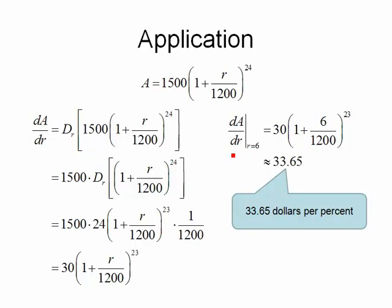So this is telling me that dA/dr, the derivative of A with respect to r, or the rate of change of A with respect to r, is 33.65 dollars per percent. So what that's telling me, if I'm at a rate of 6, and I'm going to increase my interest rate by 1%, I'm going to get 33.65 dollars more for that increase of 1%. So going from 6 to 7% means that the amount at the end of two years is going to increase by 33.65 dollars. This is what we mean when we say interpret a derivative: put the units on it and figure out what it means in the context of this problem.